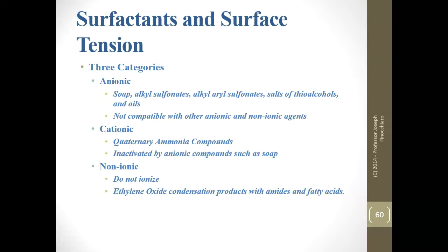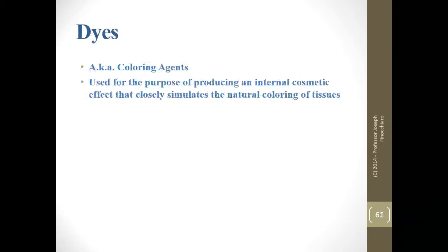There are three categories of surfactants: anionic, which are not compatible with other anionic and non-ionic agents; cationic, which are quaternary ammonium compounds (quats), inactivated by anionic compounds such as soap; and non-ionic, which do not ionize — ethylene oxide condensation products with amides and fatty acids.